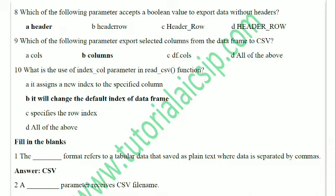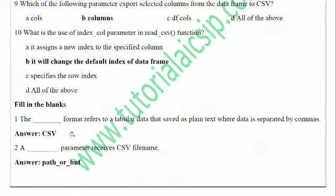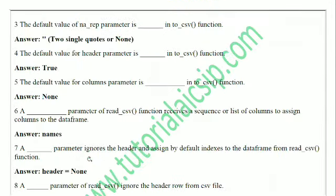Fill in the blanks section. CSV format refers to tabular data saved as plain text where data is separated by commas. The default value for `na_rep` is two single quotes (blank/empty string) or None. The default value for the `header` parameter in `to_csv` is True. The default value for the `columns` parameter in `to_csv` is None.